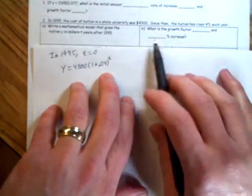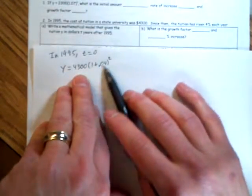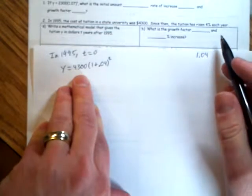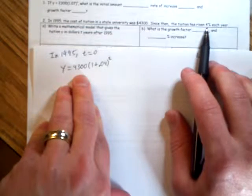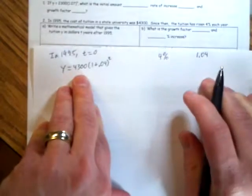In part B, it says what is the growth factor? We've learned that the growth factor is what's in the parentheses. So the growth factor is 1.04. And when it asks for the increase, the percent increase, it told us it was 4%.